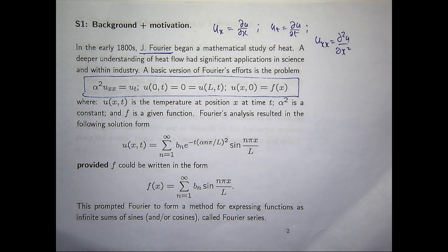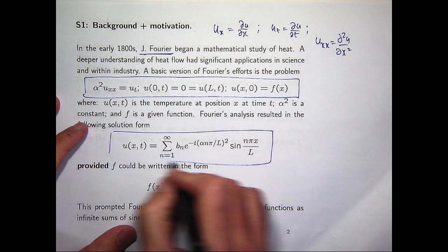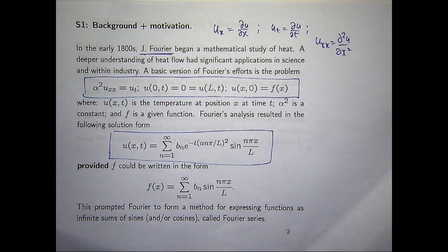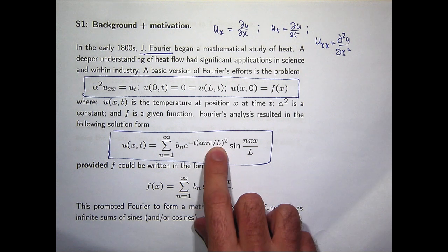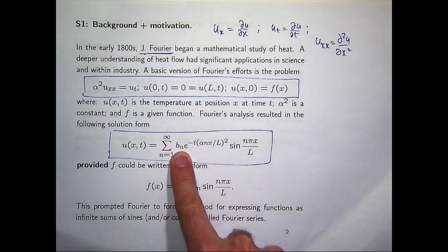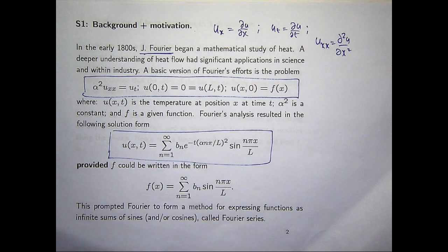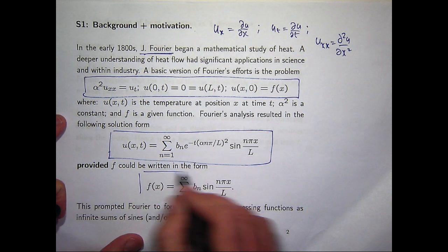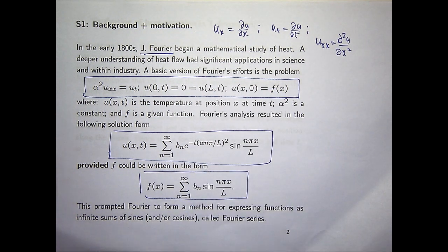Now, Fourier performed his analysis, and he came up with the following solution form. On first glance, that looks quite complex. It is, alright? It's an infinite sum involving an exponential, a sine function, and a sequence of constants, B sub n. Fourier's analysis relied on the following assumption, that f could be—the initial temperature could be written as a sum, possibly an infinite sum, of sine functions.